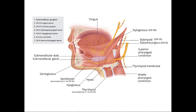Let's do a quick review of some muscles and nerves we've already covered. The tongue has both intrinsic and extrinsic muscles. Coming up here is the lingual nerve, which is a branch of the mandibular division of the trigeminal nerve — so it's from V3.